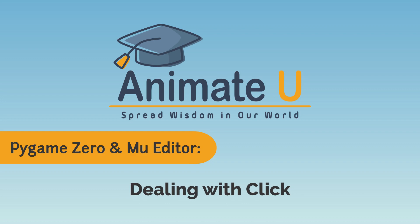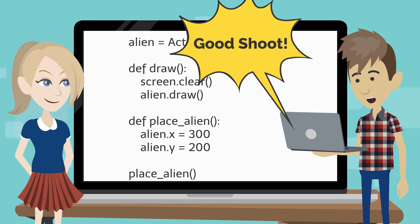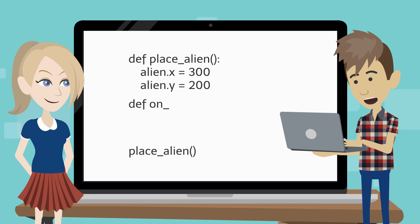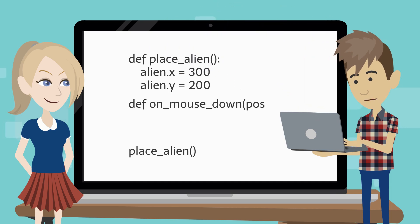Dealing with click. Now it's time to write the code that will run when the player presses the mouse. We'll display the message, Good shot, each time the player clicks the mouse. How do we deal with clicks? Pygame Zero has a built-in function called onMouseDown, which is run every time the player clicks the mouse.